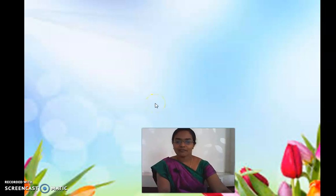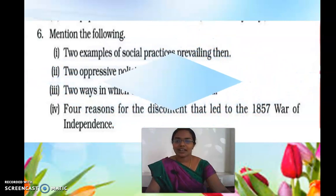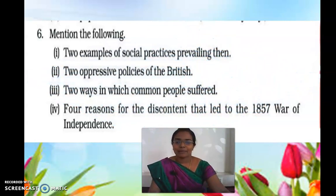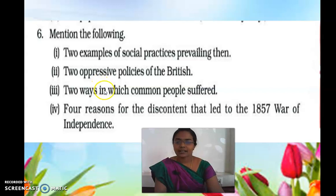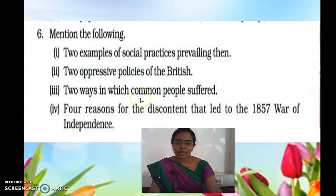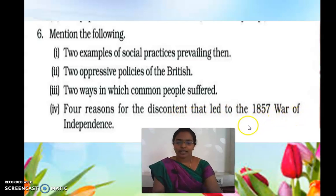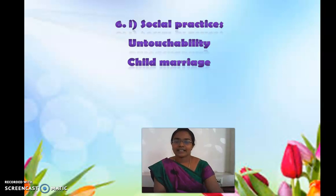Let's advance to the next question. The question asks to mention two examples of social practices, two oppressive policies of the British, and two ways in which common people suffer, plus reasons for discontent. Discontent means dissatisfaction — the dissatisfaction that led to the 1857 war of independence. To start with the answers, the social practices prevailing in society are untouchability and child marriage.